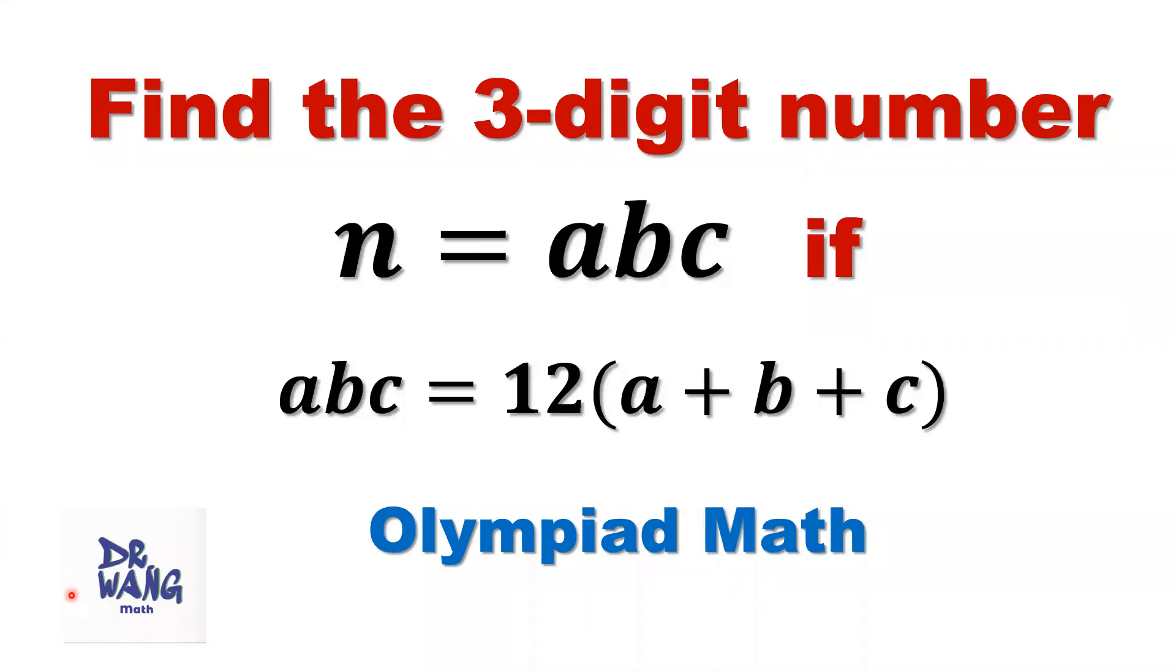Hello, Owen. I'm Dr. N. Here is the question. Find the three-digit number n equals abc if abc equals 12 times the sum of all its digits a, b, c.